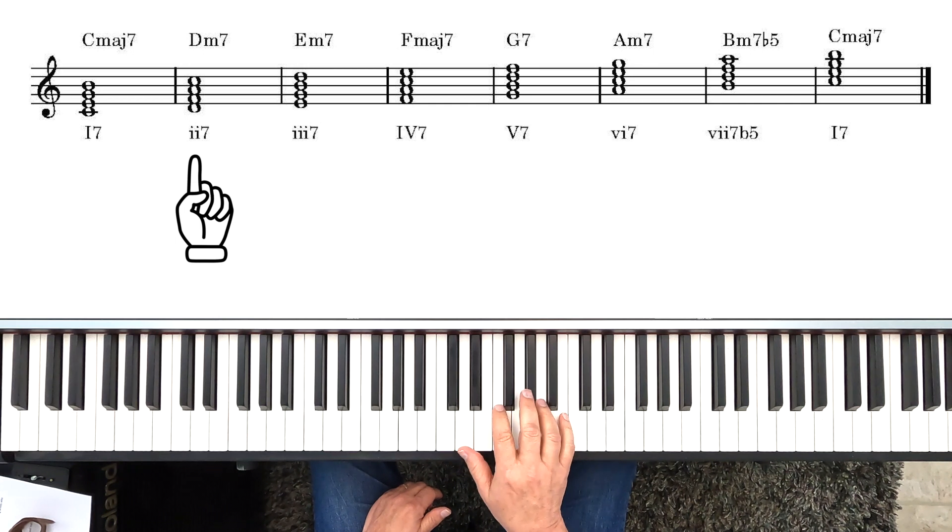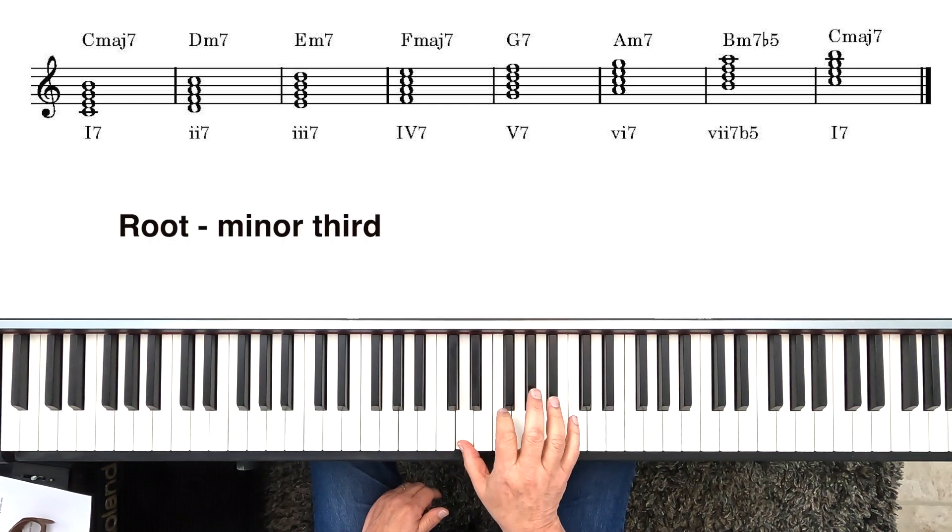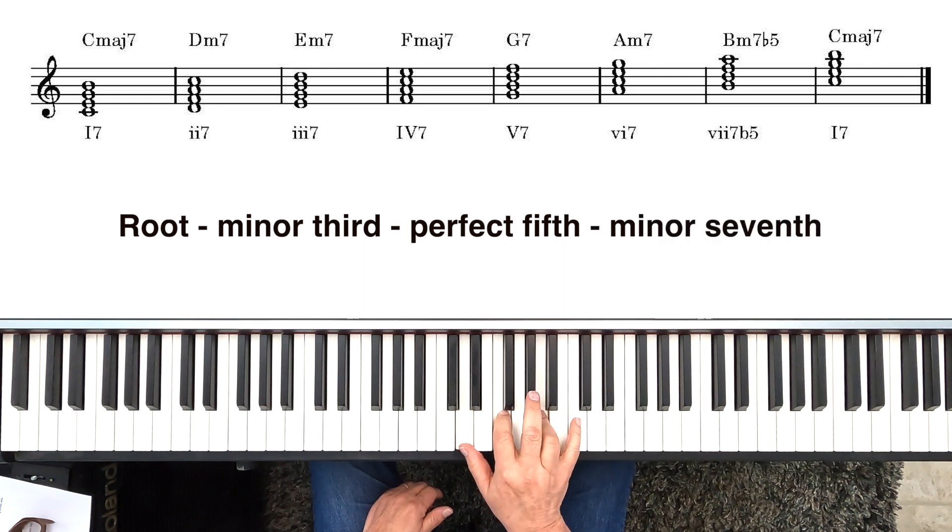A minor 7th chord consisting of the root, a minor 3rd above the root, a perfect 5th above the root, and then a minor 7th above the root. Now, we can have some fun with this chord by altering it.